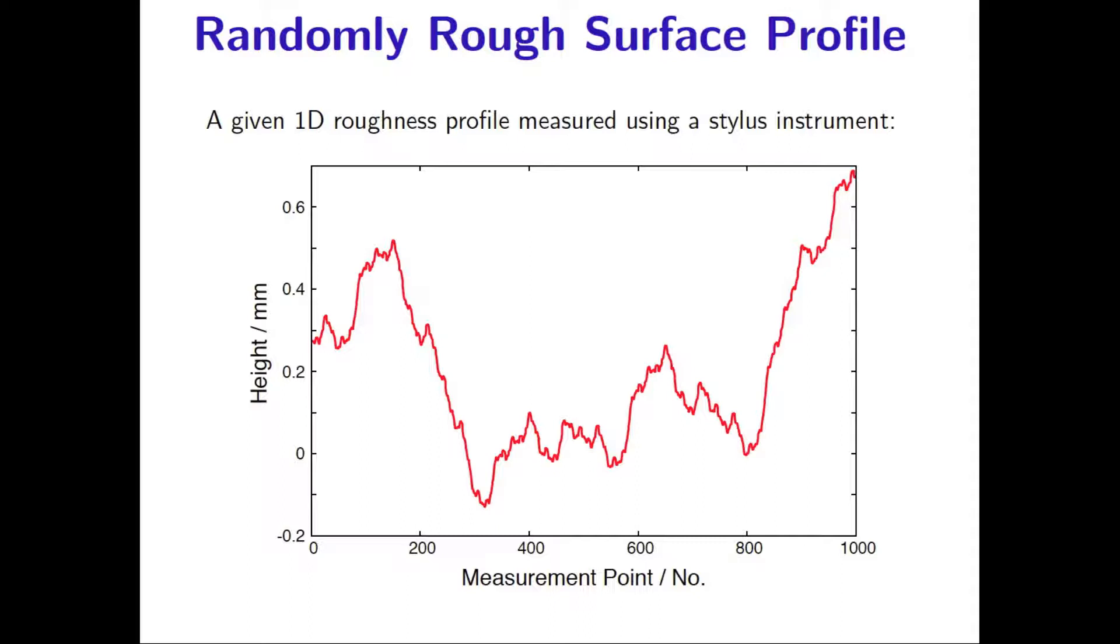We can basically differentiate between macroscale roughness components, which are superimposed by smaller scale roughness. Let us now try to model this curve using the Fourier transformation.